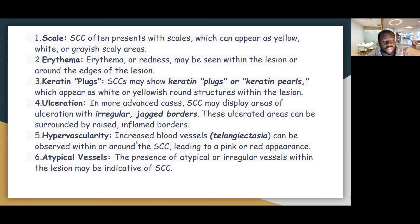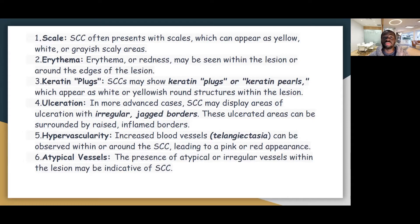You could have an atypical blood vessel pattern — irregular blood vessels. You could see roundish glomerular-like blood vessels, which you can also see in Bowen's disease. We'll see photos of lesions which could actually be Bowen's disease, which is squamous cell carcinoma in situ.